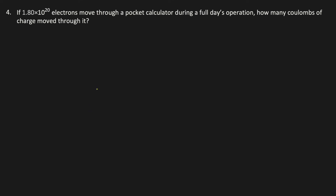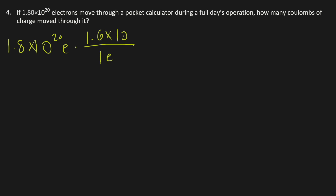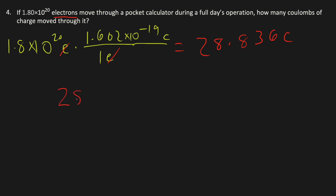Problem 4: If 1.8 times 10 to the 20th power electrons move through a pocket calculator during a full-day operation, how many coulombs of charge move through it? Convert the number of electrons to coulombs: 1.8 times 10 to the 20th electrons times 1.602 times 10 to the negative 19th power coulombs per electron. The units cancel, giving 28.836 coulombs. Because electrons are moving through the calculator and electrons have negative charge, the final answer is negative 28.836 coulombs.